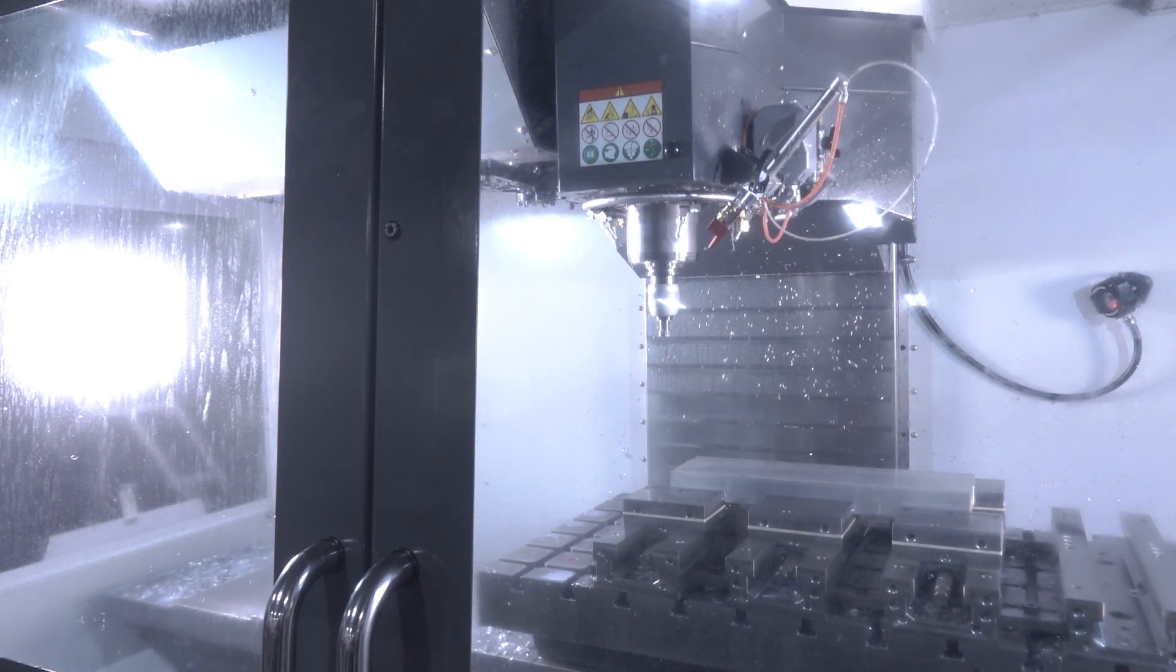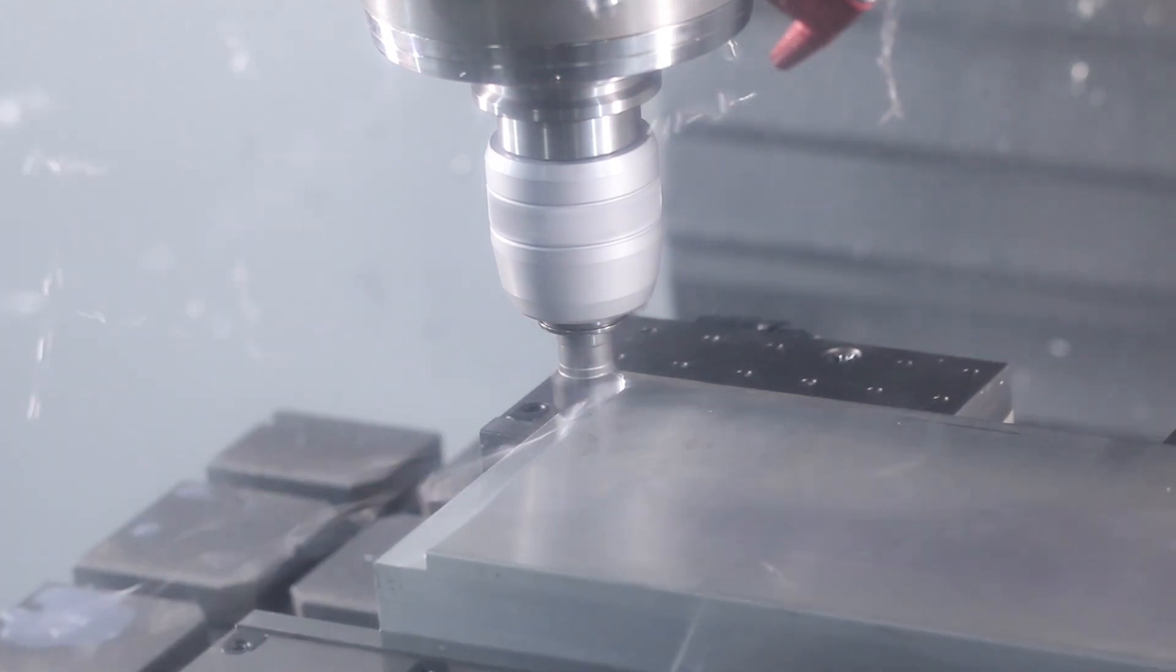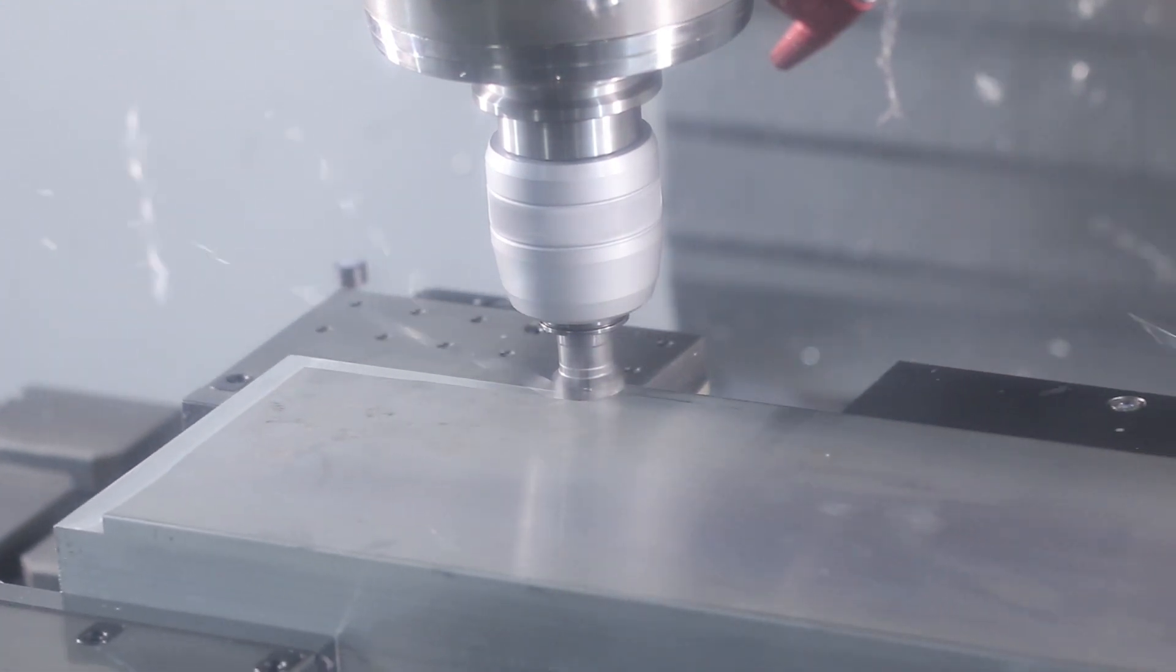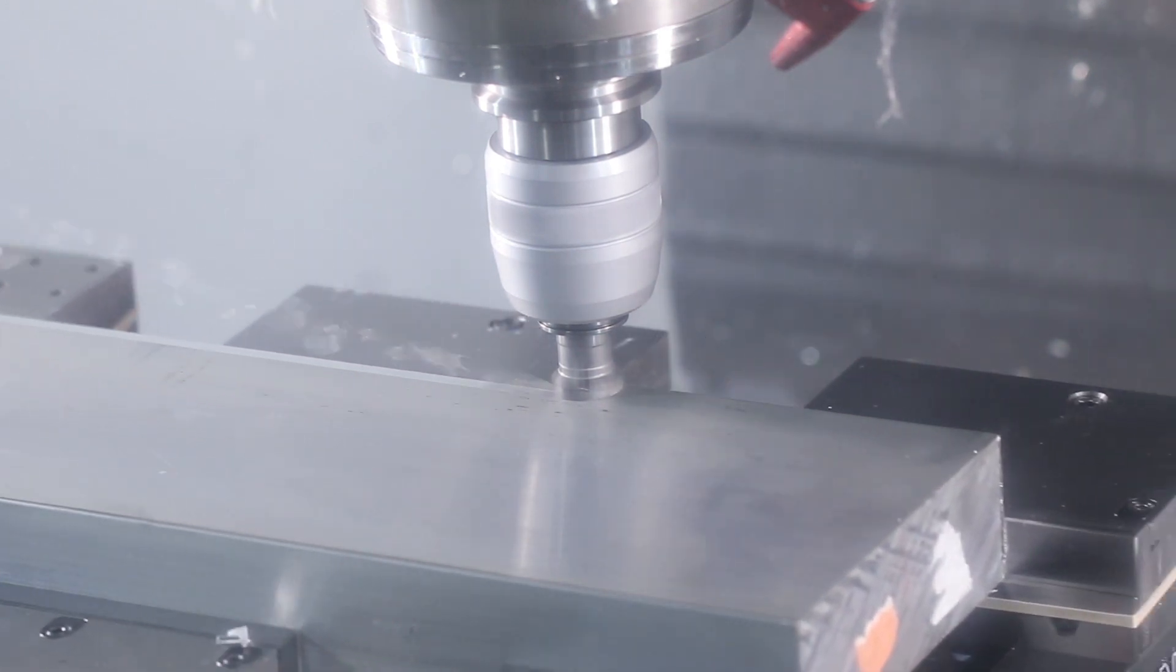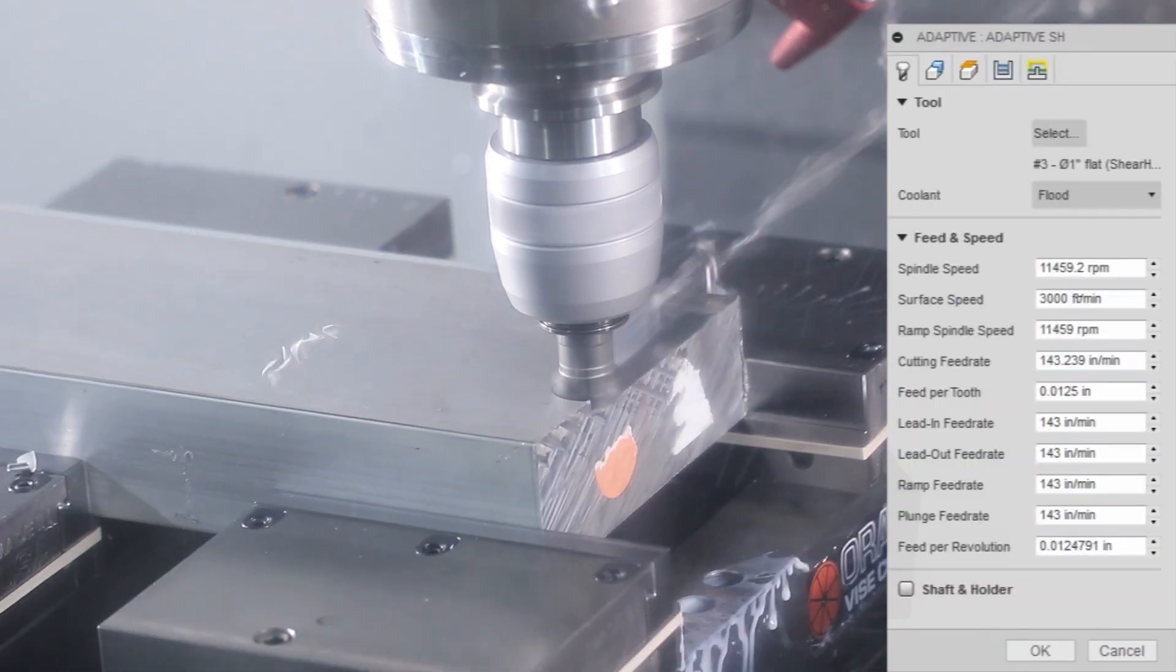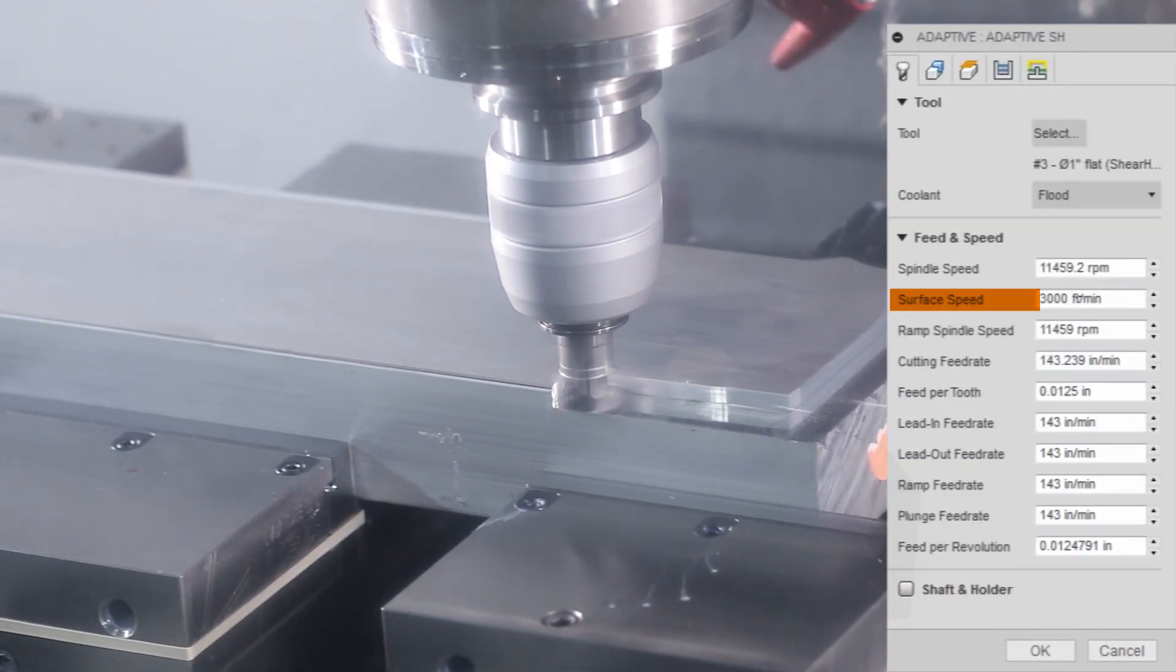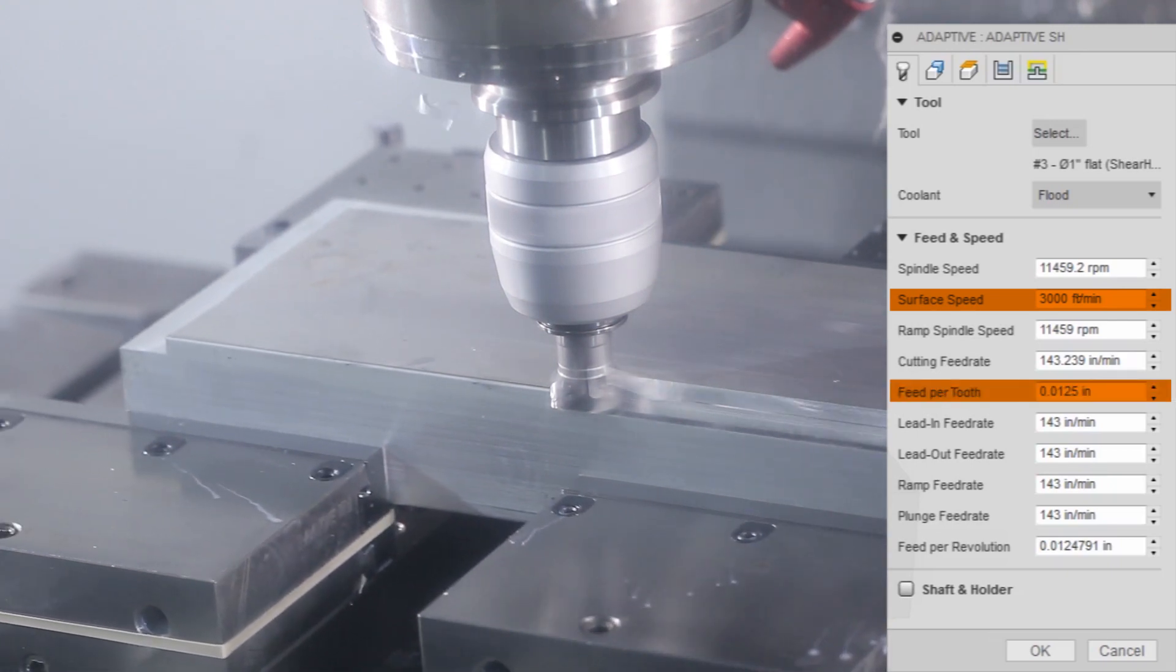So who recognizes that tool? It is a one inch shear hog being held in a Maritool milling chuck, which is a really secure way to hold something. This is one of the first times I've tried machining aluminum, especially on the Haas without coolant. Fusion 2D adaptive, 3,000 surface feet per minute, 12.5 thousandths feed per tooth, that's 143 inches per minute.